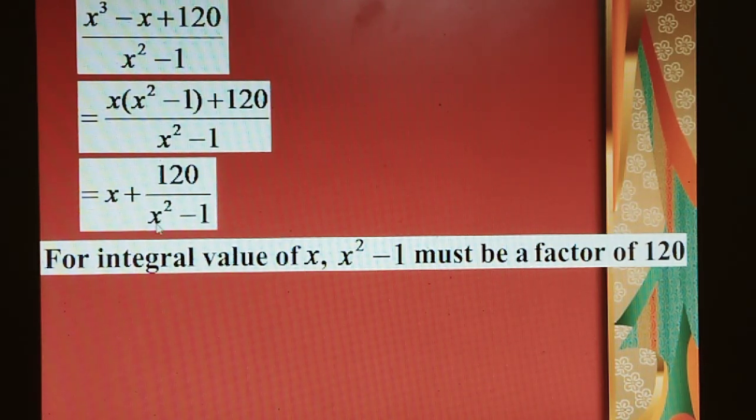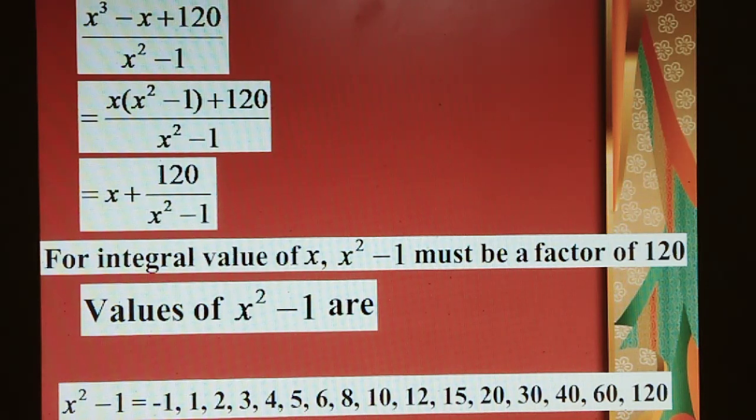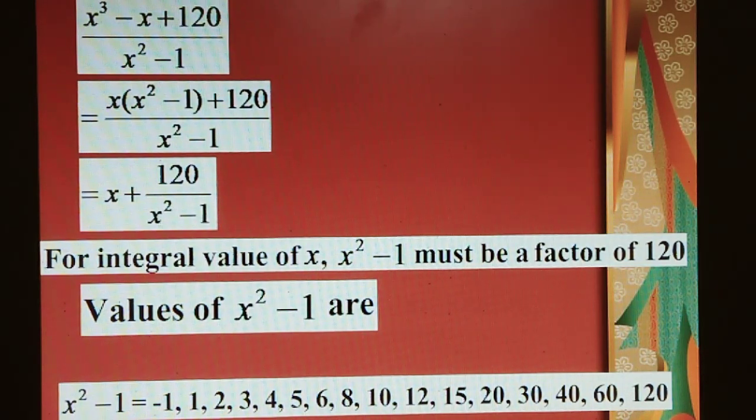So what are the factors of 120? That is: 1, 2, 3, 4, 5, 6, 8, 10, 12, 15, 20, 30, 40, 60, and 120. So all these are factors of 120, or the values of x² - 1 which are the factors of 120.